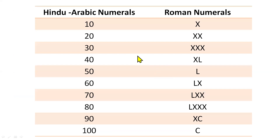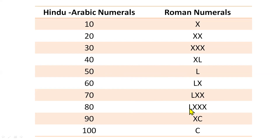Now 10 is X, 20 is XX, 30 is XXX. 40 can't be four X's, so it takes help from 50 (L): L−10 = 40, giving XL. 60 is LX, 70 is LXX, 80 is LXXX. We can't write 90 as four X's, so we take help from 100 (C): C−10 = 90, giving XC. And 100 is just C.